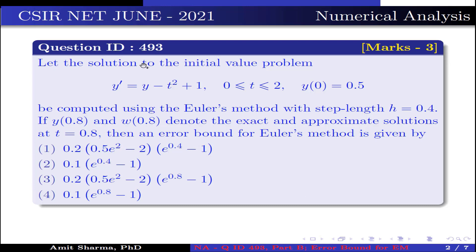The question is: let the solution to the initial value problem y' = y − t² + 1, 0 ≤ t ≤ 2, y(0) = 0.5, be computed using Euler's method with step size h = 0.4. If y(0.8) and w(0.8) denote the exact and approximate solutions at t = 0.8, then the error bound for Euler's method is given by option 1: 0.2 × (0.5e² − 2) × (e^0.4 − 1).